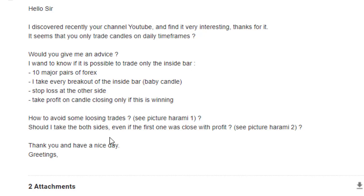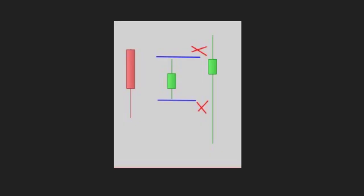'Should I take both sides even if the first one was closed with profit? See picture harami two. Thank you and have a nice day.' If the harami mother candle — previous candlestick — is an outside close, then put a sell stop or buy stop order at the mother candle high or low. This candlestick high to low is inside the previous candlestick high to low — this is the mother candle and the baby candlestick. If the previous candlestick is an outside close, then put a sell stop order at this candlestick's low.